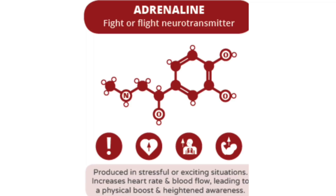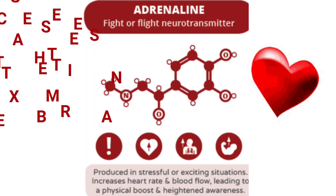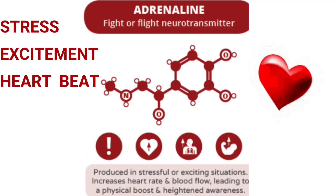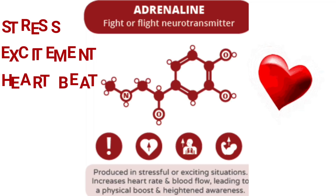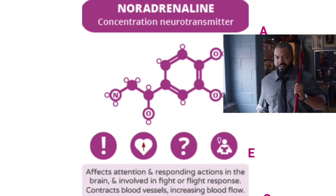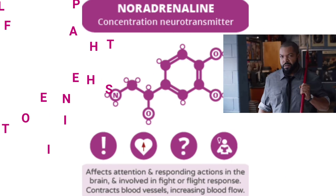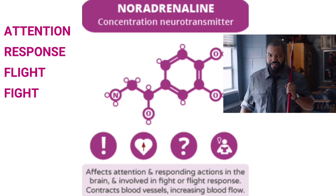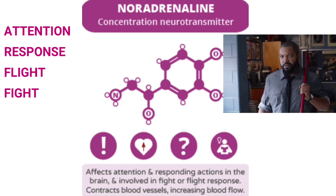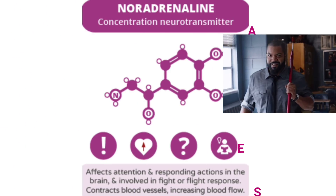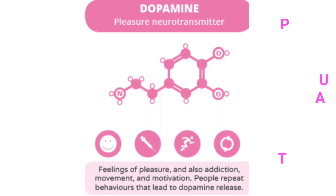Adrenaline is the fight-or-flight neurotransmitter, produced in stressful or exciting situations. It increases heart rate and blood flow, leading to a physical boost and heightened awareness. Noradrenaline is a concentration neurotransmitter that affects attention and responding actions in the brain, and is involved in the fight-or-flight response — including contraction of blood vessels and increased blood flow.